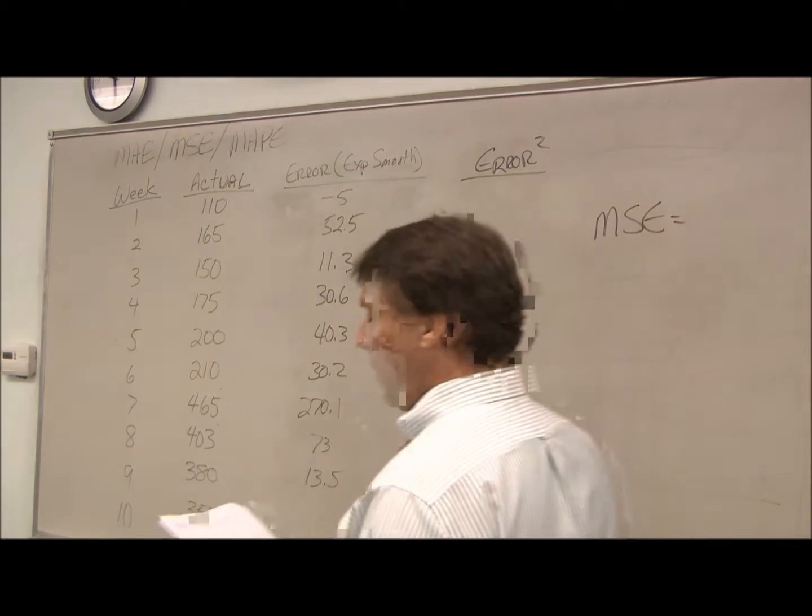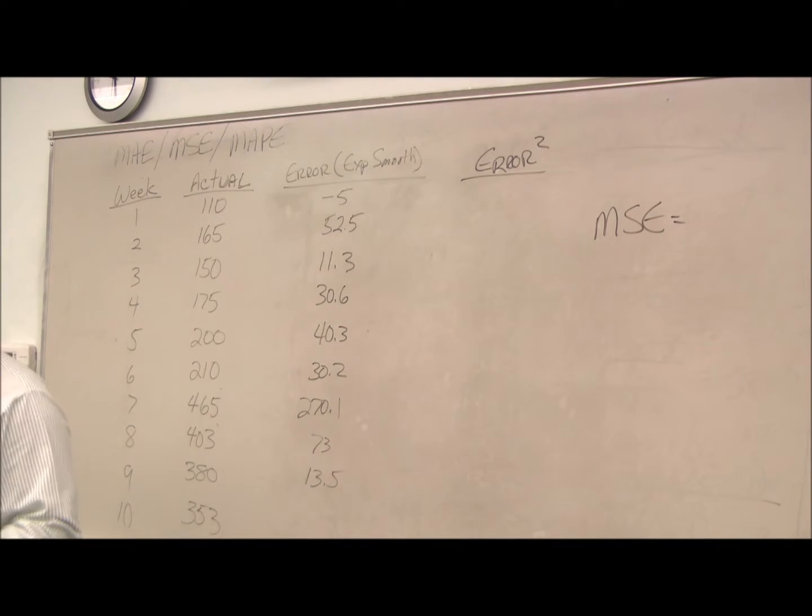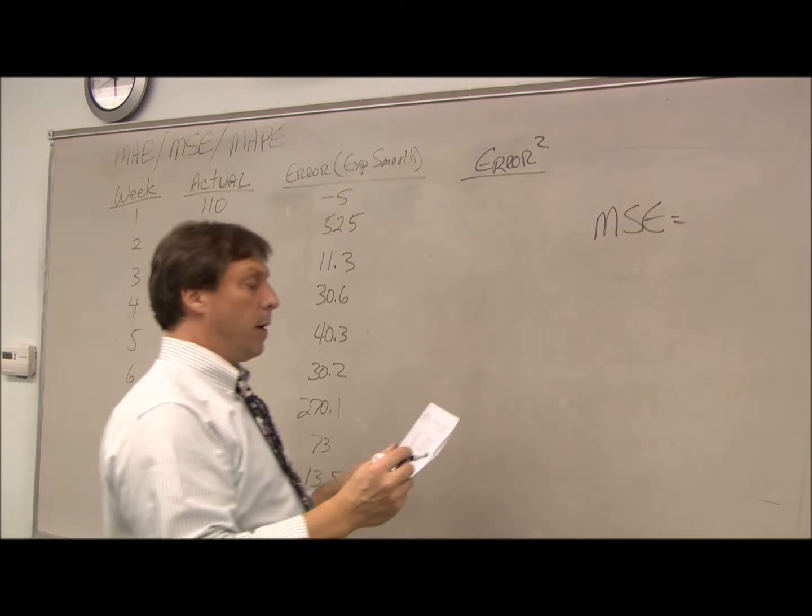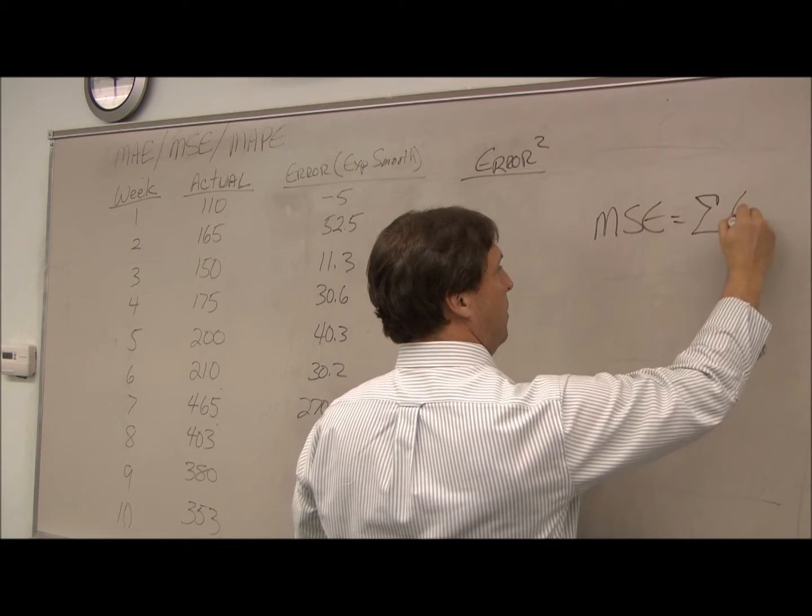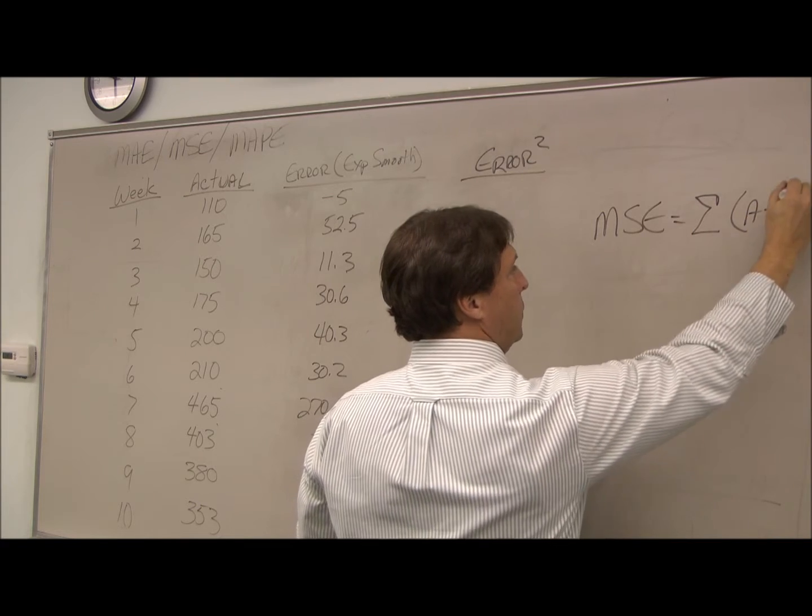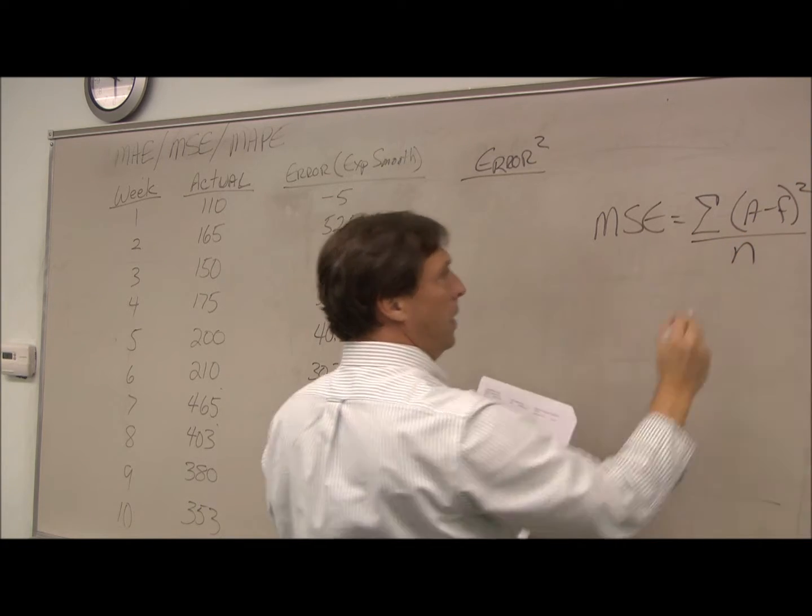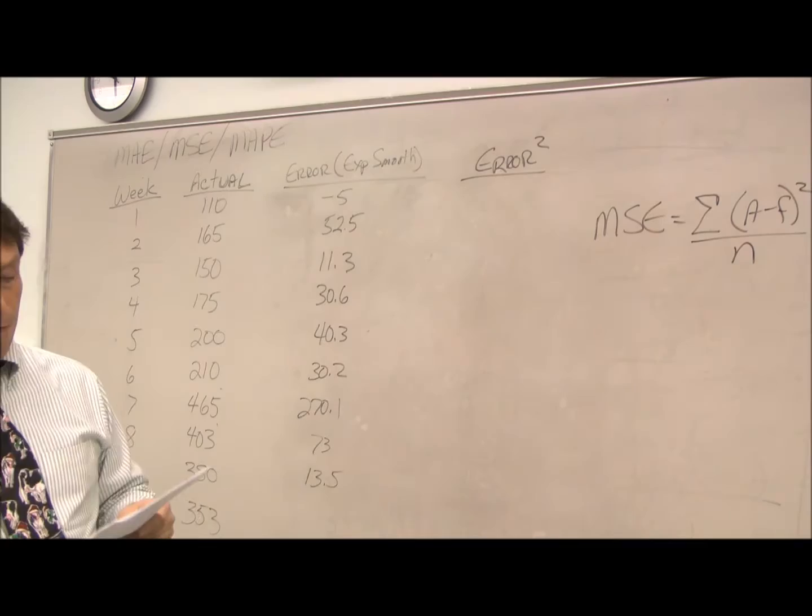All right, the next way we're going to look at our forecasts to see how accurate they are is what's called the mean square error, or MSE. The mean square error is the sum of the square of our errors, or the average of the sum of our square of our errors.